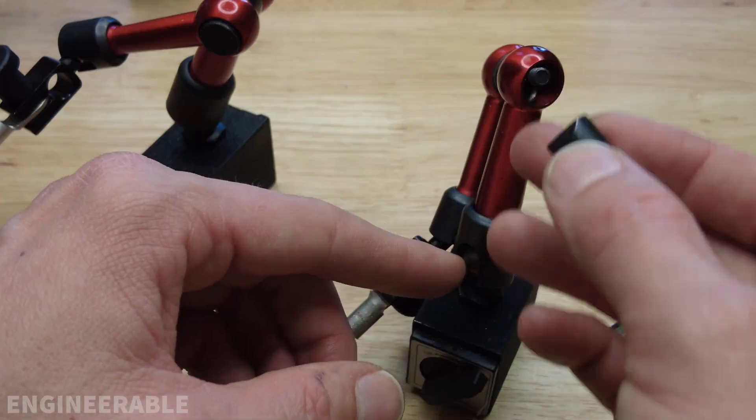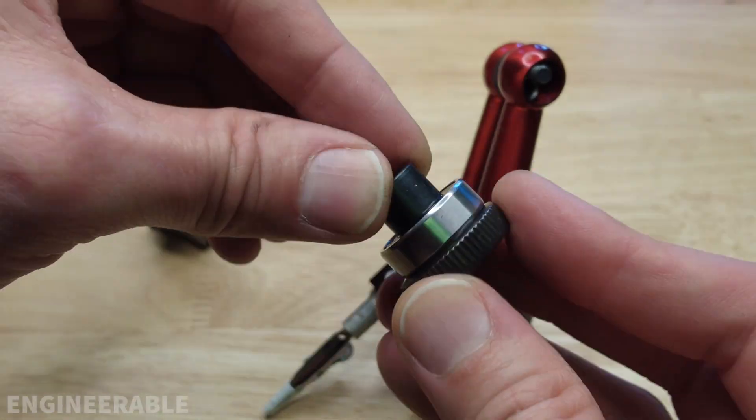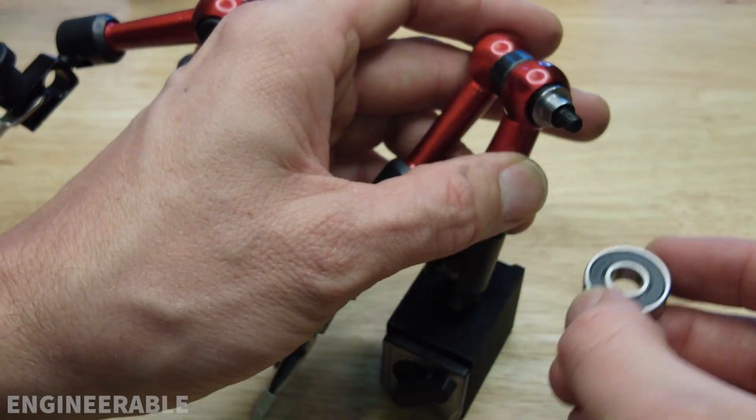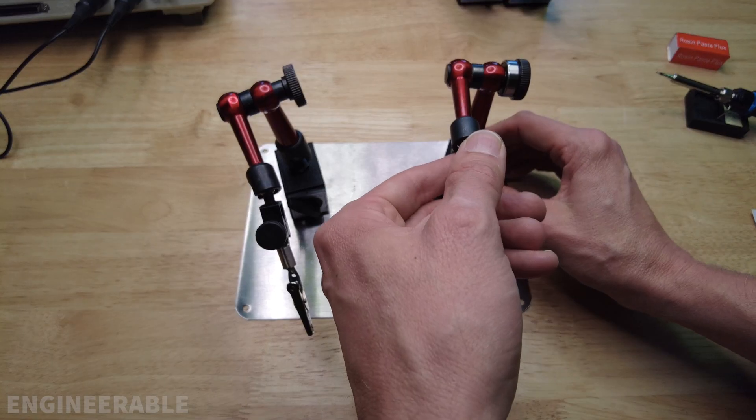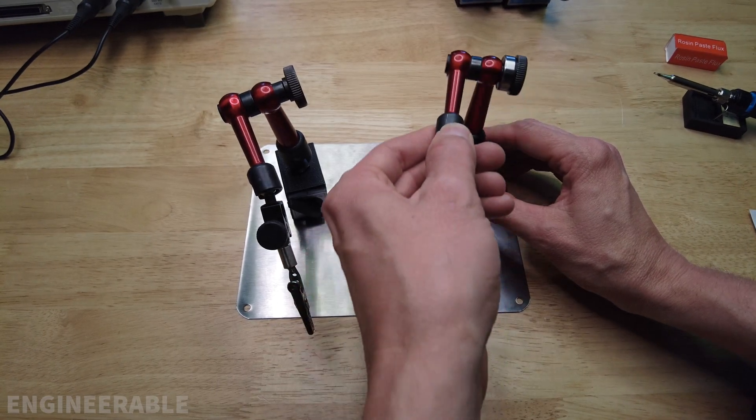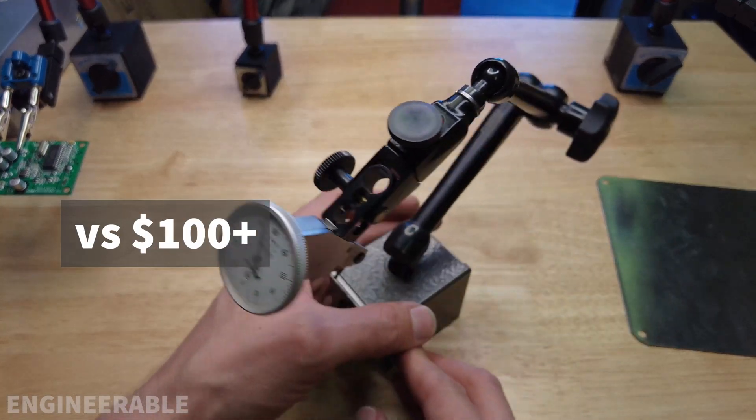In a previous video, I showed how a simple skate bearing could be used as a thrust bearing to mod one of these dial indicator arms to have much smoother motion and to be able to back drive without loosening or tightening, just like a much more expensive Noga arm would.